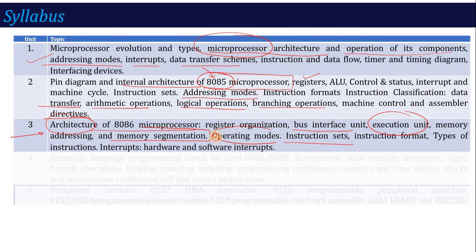Unit three also covers the various operating modes of the 8086, addressing modes for data and calls, and the different interrupts used — both hardware and software interrupts. In short, unit number three gives you a complete overview of the 8086 microprocessor.